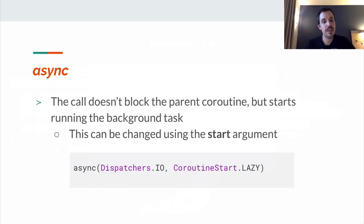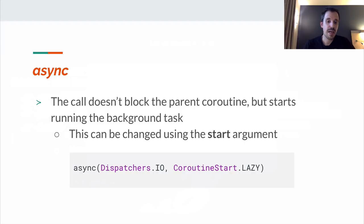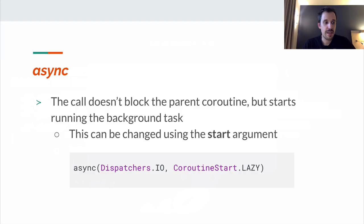As mentioned, by default async doesn't block the parent coroutine and starts running the background task immediately. But we can change this behavior by using a second argument — CoroutineStart.LAZY. Using it as an argument means the body of the async coroutine won't execute until we call await. This is normally not what we want, but be aware that it exists and can be helpful in some situations.